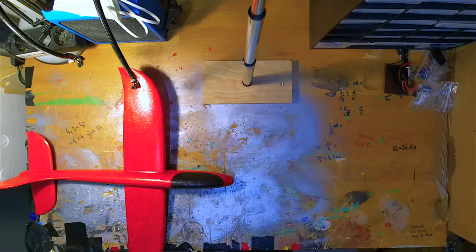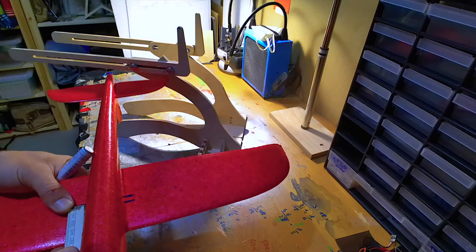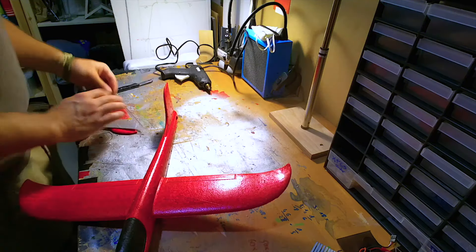After unpacking the glider I tried to find the center of gravity, which was approximately four centimeters from the wing top.